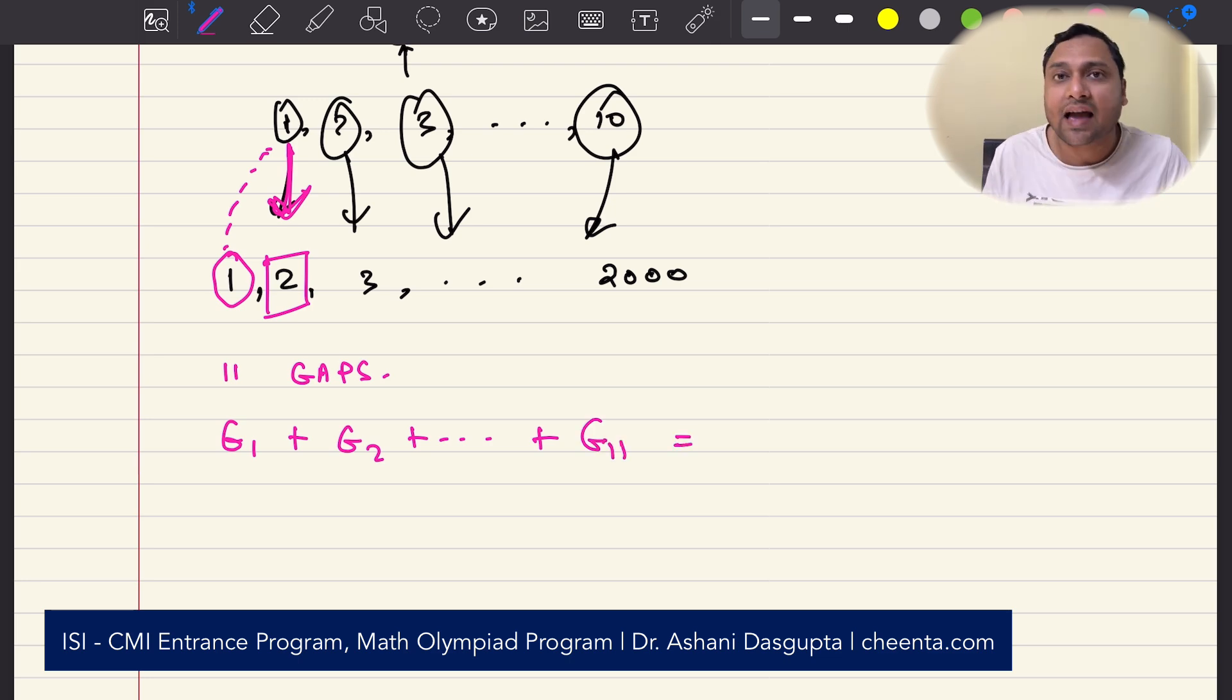And all of these gap values should add up to 2,000 minus 10. Because there are 10 numbers which are the outputs. So, when we are calculating the gaps, we are not calculating the actual outputs. If this particular number is not counted in any gap, it's not in a gap, it's actually an output value. So, the 10 numbers which are the actual output do not contribute to the gaps. So, we have 1990, this sum is 1990.